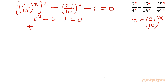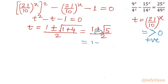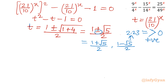Applying the quadratic formula, t equals minus b plus or minus square root of 5, all over 2. So the two values are: 1 plus root 5 over 2, and 1 minus root 5 over 2. Since root 5 is approximately 2.23, the second value is 1 minus 2.23, which is negative. But t, being an exponential expression, cannot be negative — it is always greater than zero. So we reject the negative value.